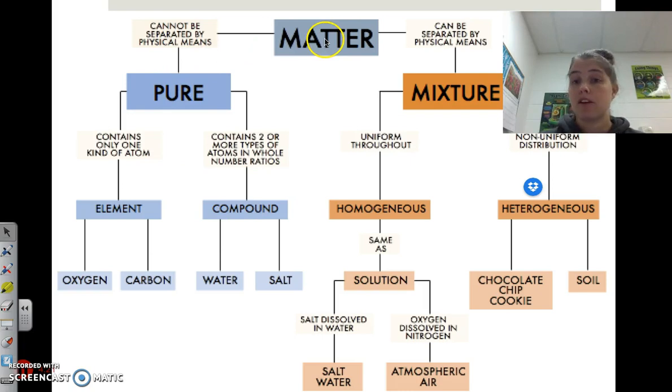Let's go back up to matter now. If it can be separated by physical means, meaning if I can pull it apart, it is a mixture. If it is uniform throughout, that means you can't really tell where one thing begins and the other thing ends, it would be a homogeneous mixture. A homogeneous mixture is also known as a solution. You will hear me say solution. Solution is a homogeneous mixture.